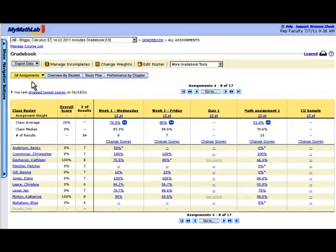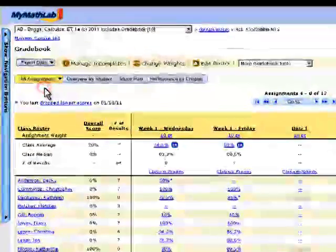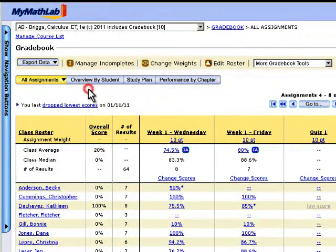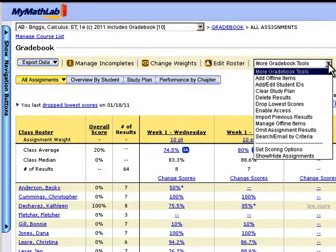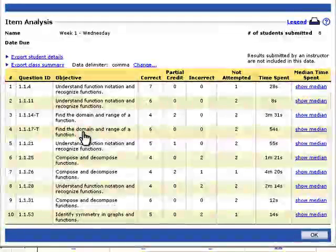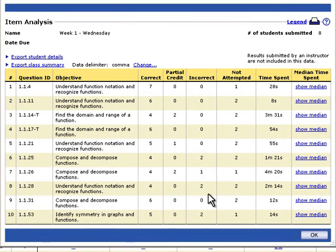MyMathLab features a robust grade book that is automatically populated as students complete their work. The grade book can provide you with information to help you teach the course more effectively. For instance, you can easily identify homework exercises that students struggled with, allowing you to target review to areas that students are finding the most challenging.